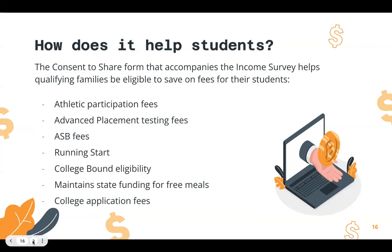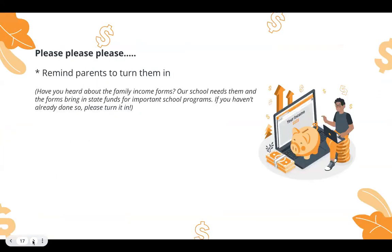How else does it help students? When the forms are turned in, families can save money on things like athletic participation, advanced placement tests, ASB fees for their sites, Running Start and College Bound programs, state funding for free meals, and even discounts and no-cost college applications. So you can see it's not just the money we bring in for students — it's all these other things that help students qualify.